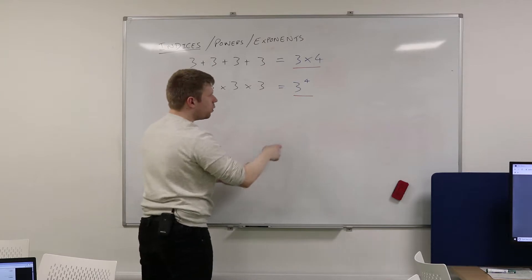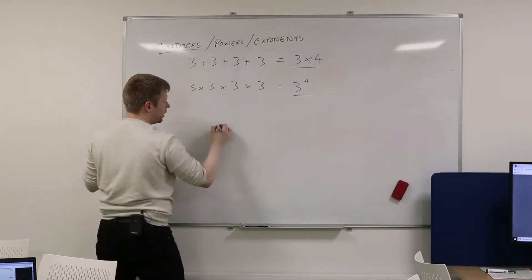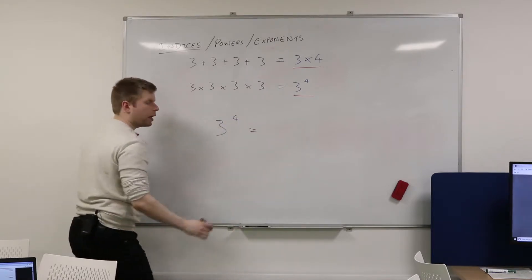So let's work with this. What is 3 to the power of 4? Either stick in your calculator or somebody might be able to tell me. 81. Perfect.